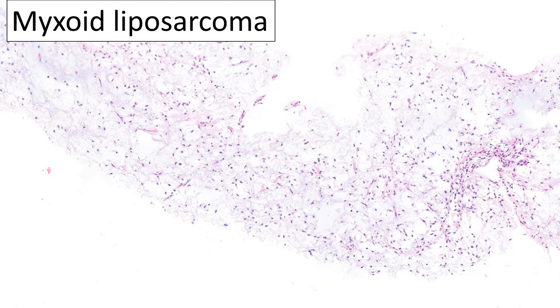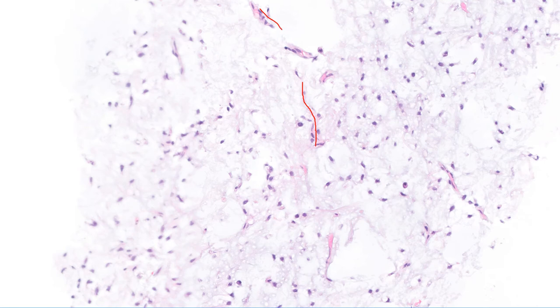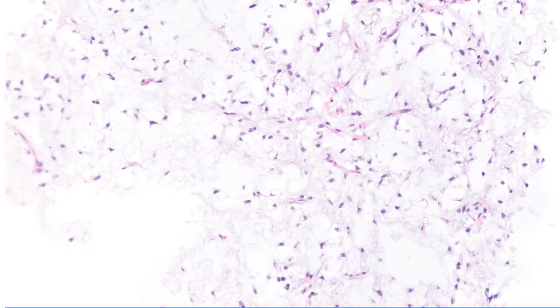The third tumor is myxoid liposarcoma, and I've deliberately chosen a very low-grade example. The two characteristic features: first, of course, the myxoid nature of these lesions — though that's not very helpful since many other myxoid lesions can look like this. The second, perhaps most characteristic feature, is this delicate vascular network, often referred to as a chicken wire network of vascular channels. Here it is — far more obvious. Notice these delicate vascular channels scattered through the tumor, while the neoplastic cells in the background again look extremely bland.